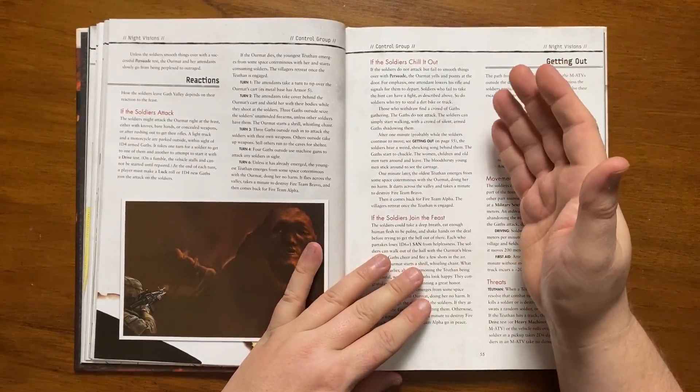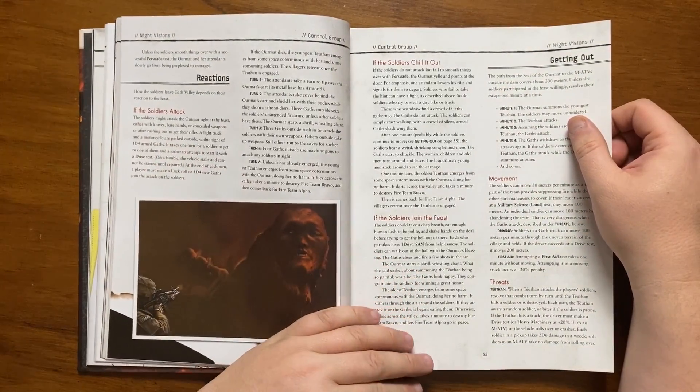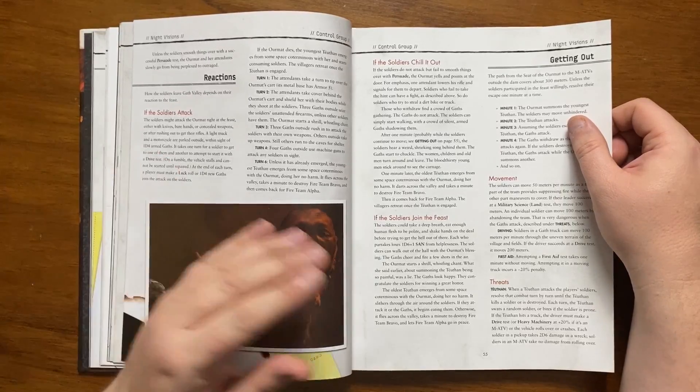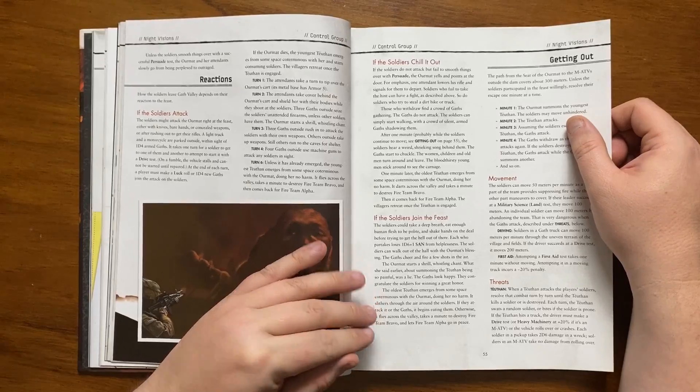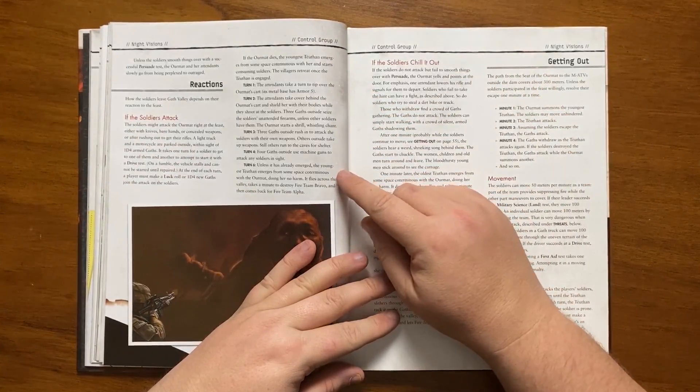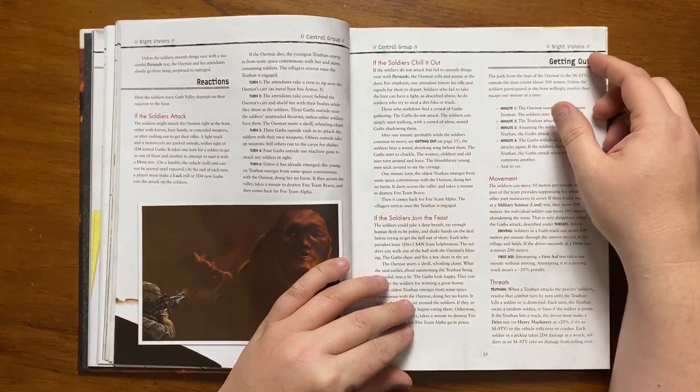If they react by attacking with knives or concealed weapons the Gath will mount the truck with a gun on top and start firing at the soldiers. If the Ormat dies the youngest Tuathan emerges from thin air and starts consuming the soldiers. It gives a turn by turn explanation of what happens as they flee. If the Ormat is not killed the Tuathan will not emerge until the sixth turn at which point it will fly across the valley ahead of the soldiers and destroy Bravo team before coming back for Alpha team.